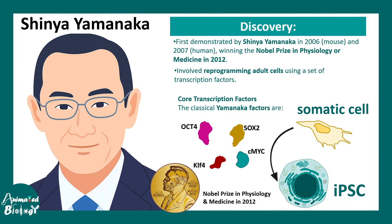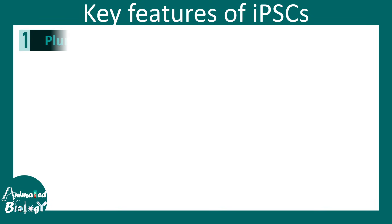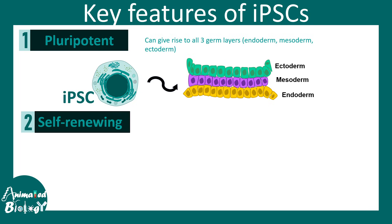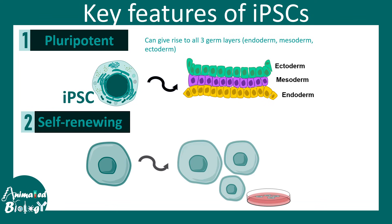The transcription factors are OCT4, SOX2, c-MYC, and KLF4. The key features of iPSCs are that they are pluripotent — they can give rise to three germ layers, including ectoderm, mesoderm, and endodermal derivatives. They are also self-renewing, meaning they can proliferate and have the capability to differentiate into specific lineages.